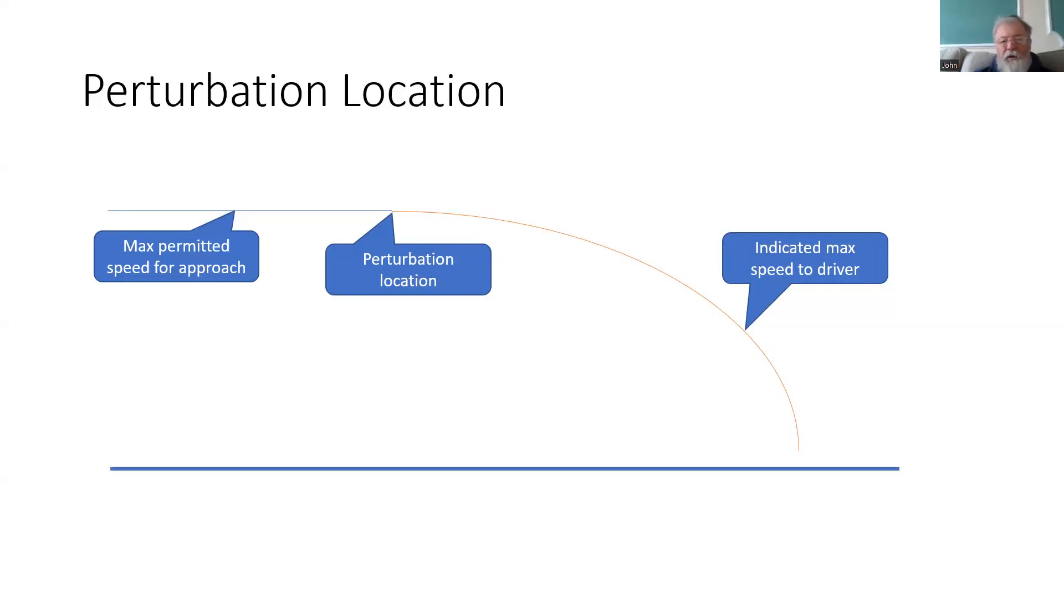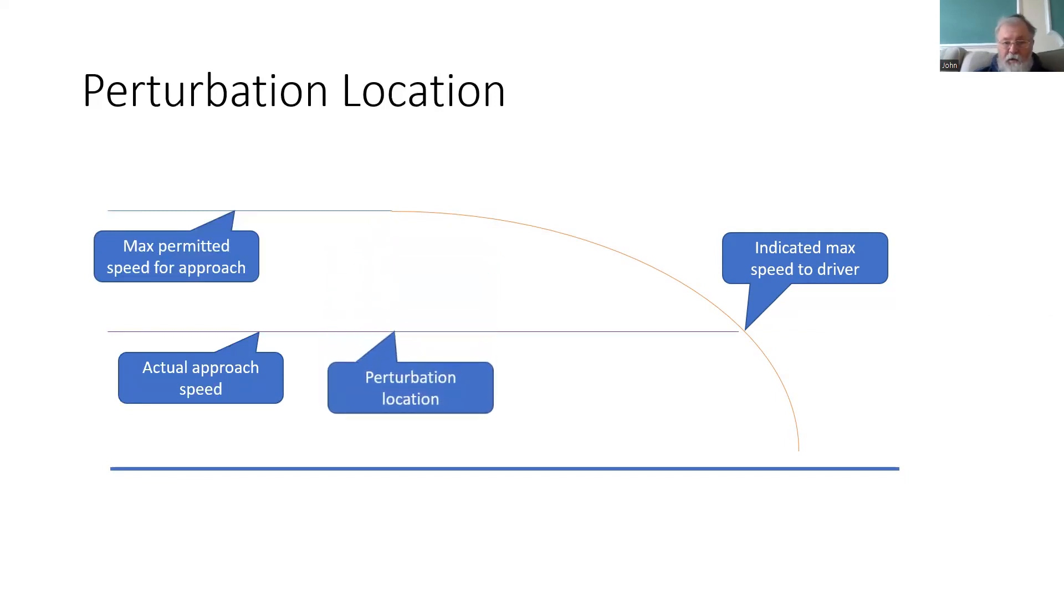That perturbation location is always based on the maximum permitted speed of the train, not on its current speed. If the train is traveling slower, the perturbation location remains at the same physical place, calculated onboard to be based on the maximum permitted speed.